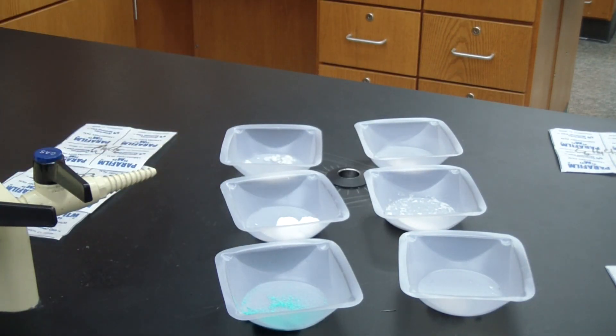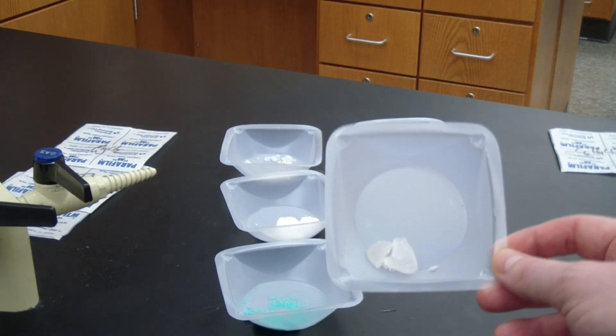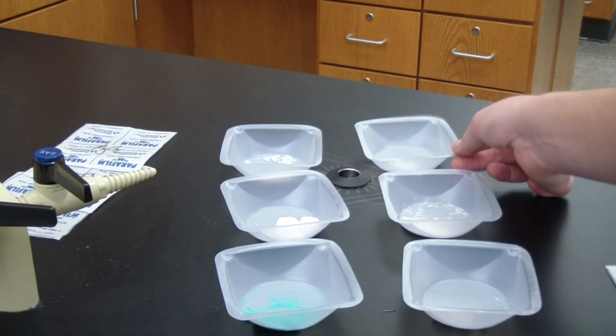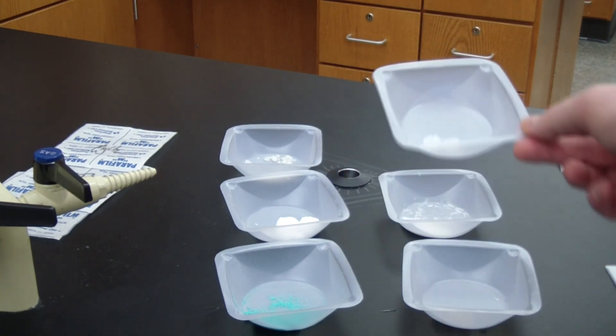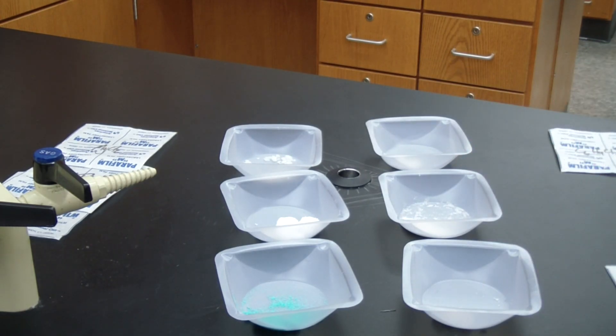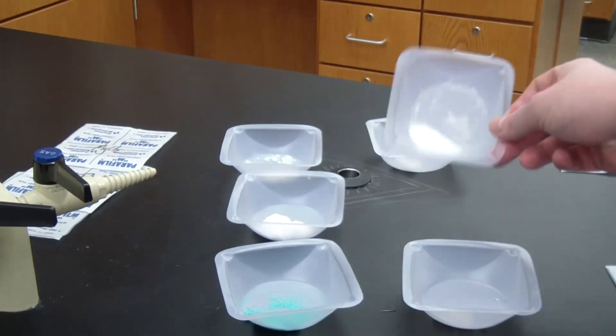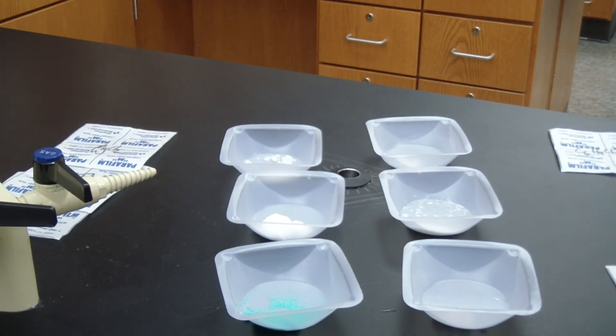And then if you compare that to our covalent compounds over here on the right, you can actually very easily see that there's really no distinguishing marks between them. The ionics and the covalents kind of look the same, especially when you take a look at this one as compared to this one. It's all just white crystals or different colored crystals or different chunks. So a physical description of a substance really doesn't do you much good when you're trying to identify something as ionic or covalent.